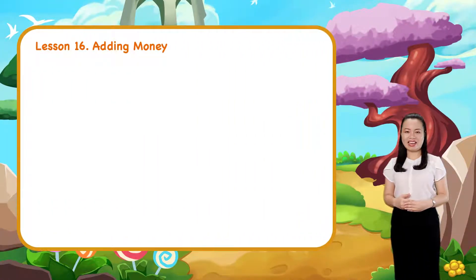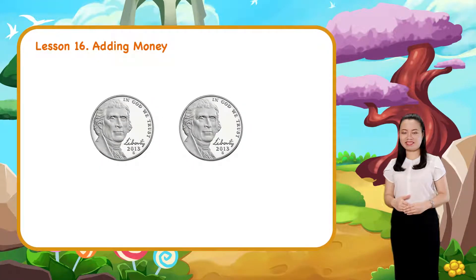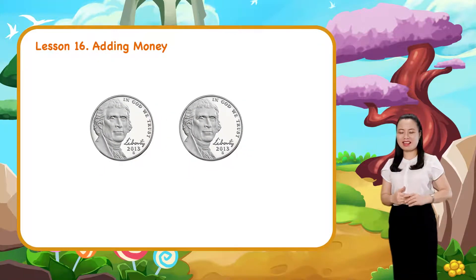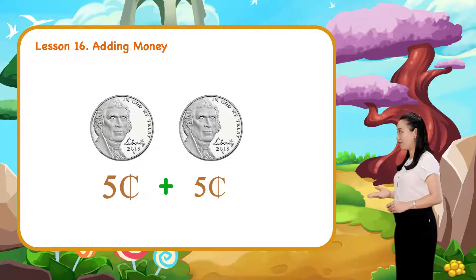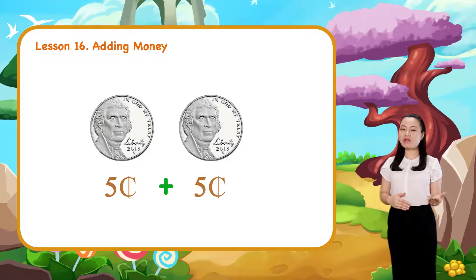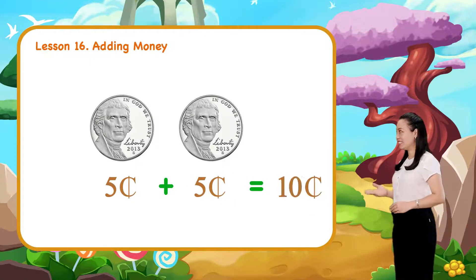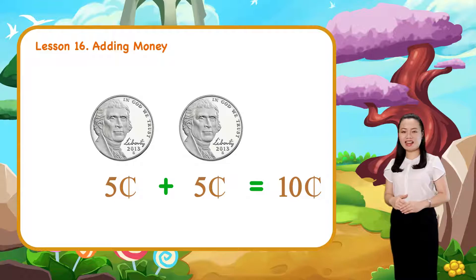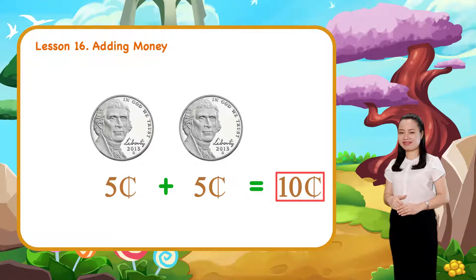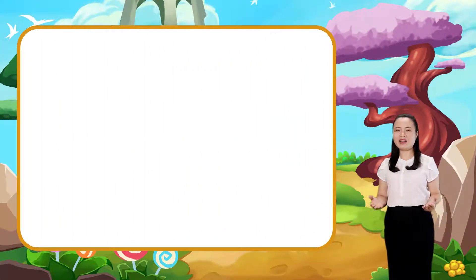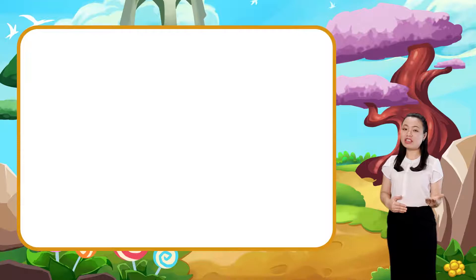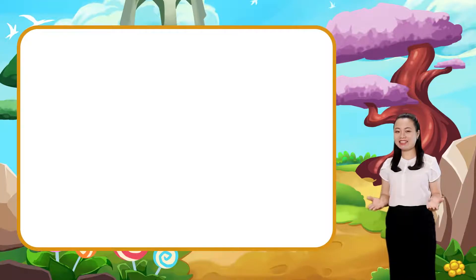Here we have two nickels. A nickel is worth five cents. Adding five and five, we get ten. So, we have ten cents. Now you know how to add money.